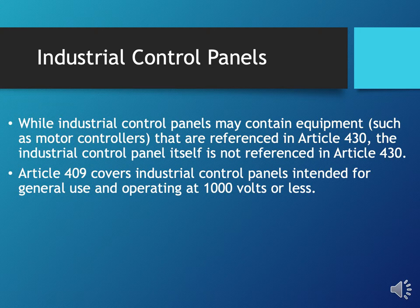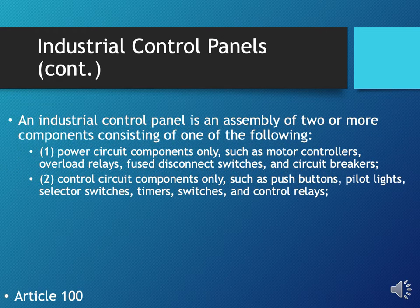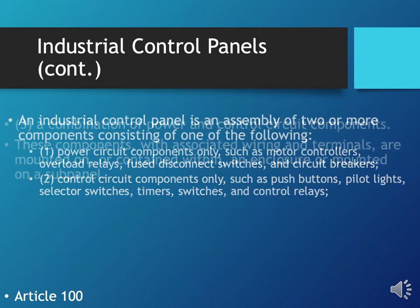While industrial control panels may contain equipment such as motor controllers referenced in Article 430, the industrial control panel itself is covered by Article 409, which covers industrial control panels intended for general use operating at 1,000 volts or less. An industrial control panel, as defined in Article 100, is an assembly of two or more components consisting of power circuit components — such as motor controllers, overload relays, fuse disconnect switches, and circuit breakers — or control circuit components such as push buttons, pilot lights, selector switches, timers, and control relays.